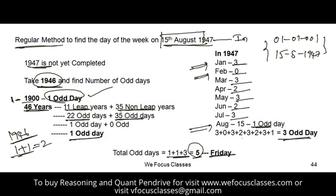The code for 5 is Friday, so the answer is Friday. The method: take the previous completed year, calculate century odd days, calculate remaining years' odd days, then calculate odd days in the given year up to the date. Add all three parts together to get your answer.